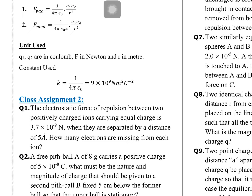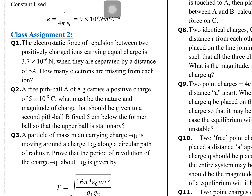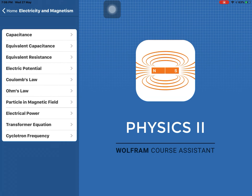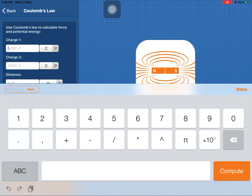The units to be used are Newtons and Coulombs. Now Class Assignment 2, first question: the electrostatic force of repulsion between two positively charged particles carrying equal charge is given. When separated by a distance of 5 angstroms, how many electrons are missing from each ion? First find the amount of charge, then find the number of electrons.